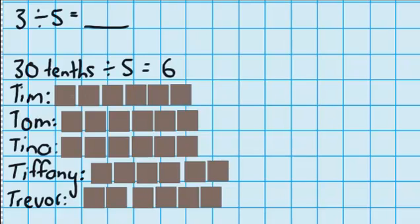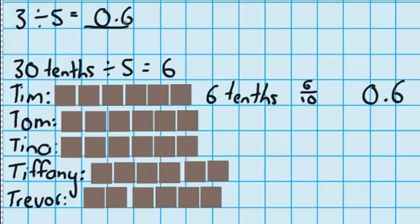So I just gave everyone 1 2 3 4 5 6, 6 tenths of a chocolate bar which I could record like that or like that, 6 tenths of one chocolate bar. So 3 divided by 5 is 0.6.